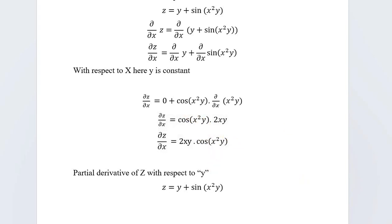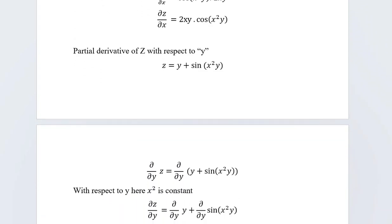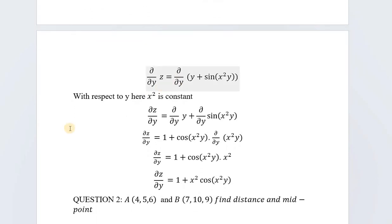I hope the derivative with respect to x is understood. Similarly, the partial derivative with respect to y will follow the same process. When we differentiate with respect to y, x² becomes constant. So ∂z/∂y = ∂/∂y(y) + ∂/∂y(sin(x²y)). The derivative of y with respect to y is 1.